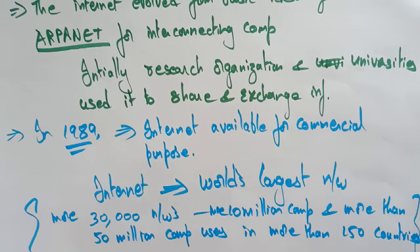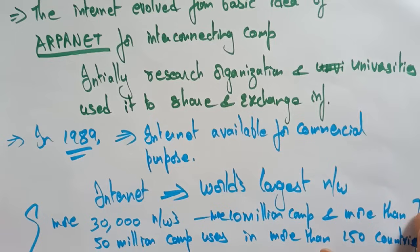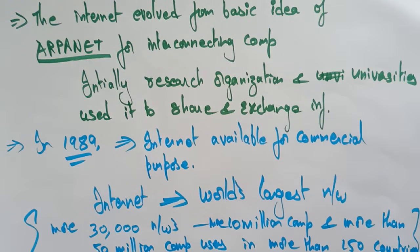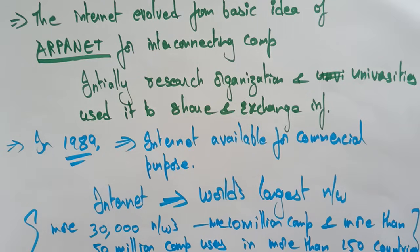So this is the history of the internet. The roots started from the ARPANET system of the Advanced Research Project Agency of the US Department of Defense in 1969. In between that period they used the internet within organizations and universities to share and exchange information. Later, in 1989, the US government lifted restrictions and made the internet available for commercial purposes, and the internet has grown rapidly to become the world's largest network.